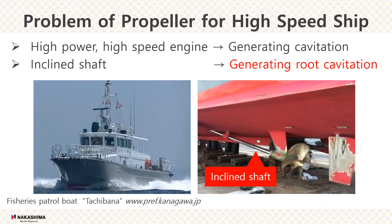I'd like to explain the problem of propellers for high-speed ships. In recent years, small high-speed ships which operate over 22 knots are generally used as fishery patrol ships, custom ships, high-speed ferries, and so on. Such ships are equipped with high-power, high-speed engines and propellers with limited diameter for convenience of placement. Due to these factors, absorption horsepower per propeller blade area is high, and therefore cavitation happens easily.